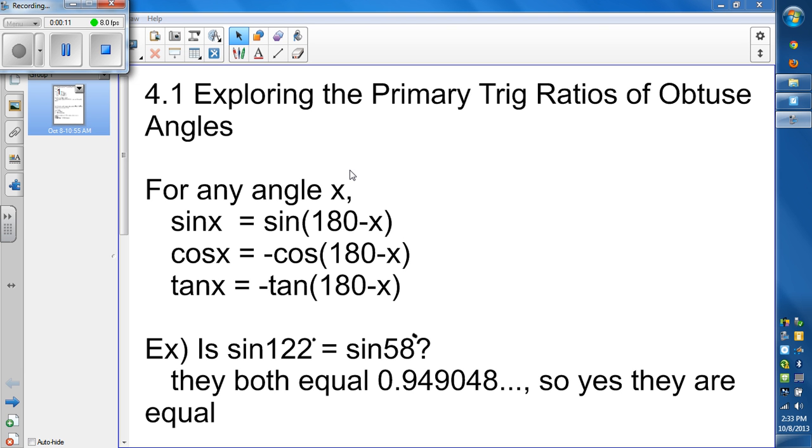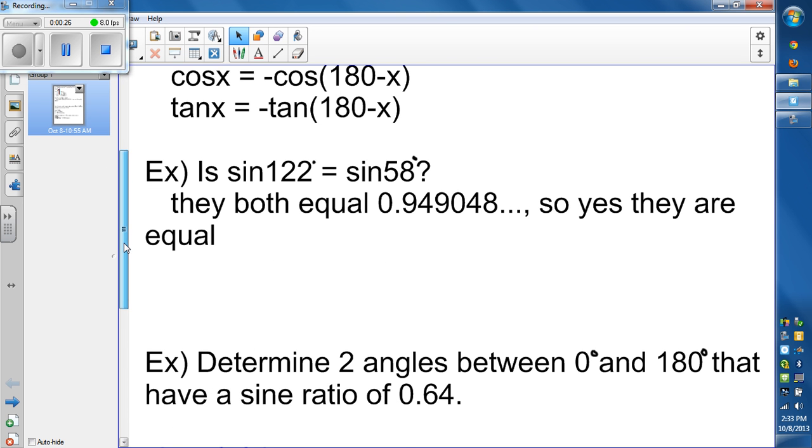For any angle x, sine of x is equal to sine of 180 degrees minus x. You can test this by plugging numbers into your calculator. Cos of x is equal to negative cosine of 180 minus x, and tan of x is equal to negative tan of 180 minus x.